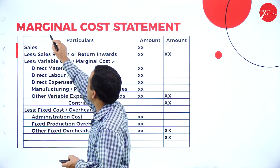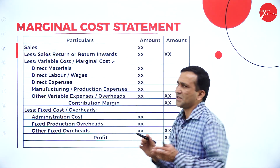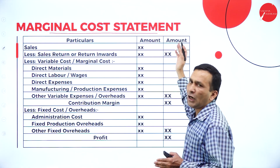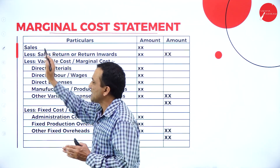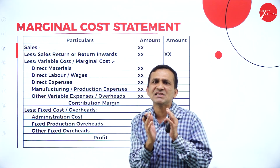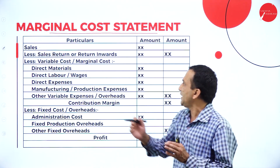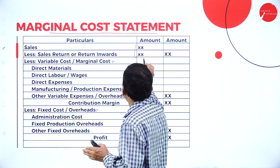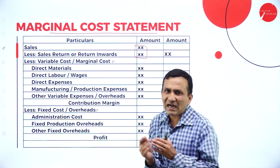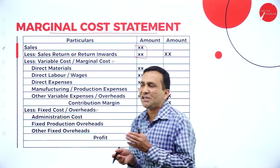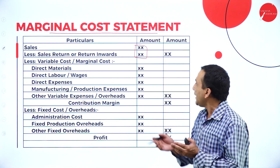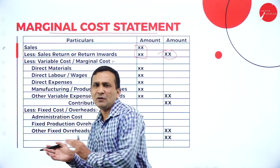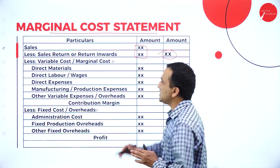There is a format related to the marginal costing statement. It has an inner column and an outer amount column. The first item is sales. If a sales return or return inwards is clearly given in the question, we subtract it from gross sales to get net sales. If it is not given, no problem — we directly consider the sales figure.